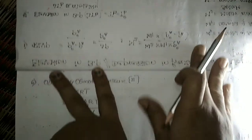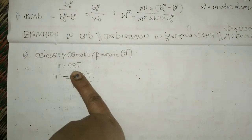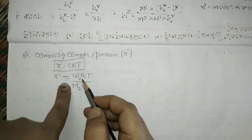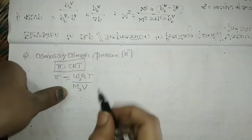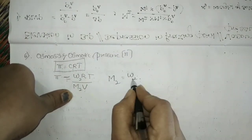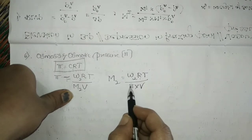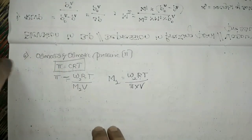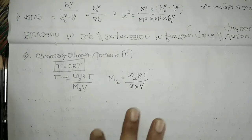The last colligative property is osmosis and osmotic pressure, represented by pi. The formula is pi equals CRT, where C is the molar concentration. Substituting C as (W2 / M2) × (1/V), we get pi equals W2 RT / M2 V. For molar mass calculation, M2 equals W2 RT / pi V. Again, the colligative property pi is in the denominator, consistent with the inverse proportionality rule. Remember all these formulas — more problems will be solved based on these four colligative properties.